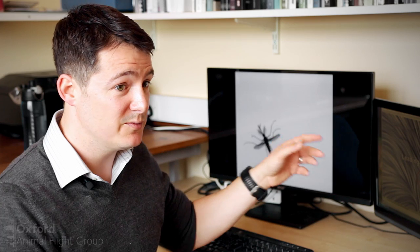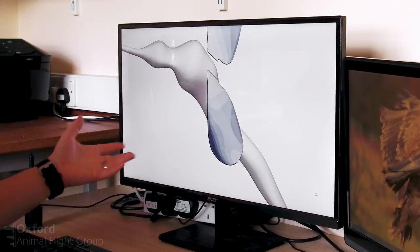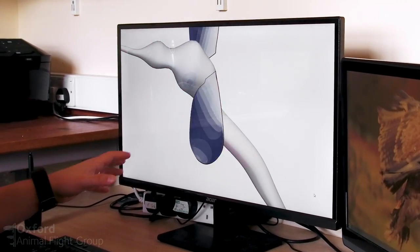So generally the larger the angle you move your wing through, the more lift force you can produce. However, that obviously can't work for mosquitoes because they're using a really small angle. So we wanted to understand what aerodynamic tricks mosquitoes might be doing.